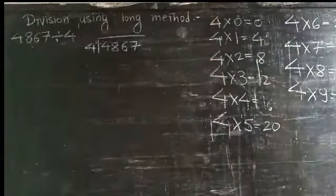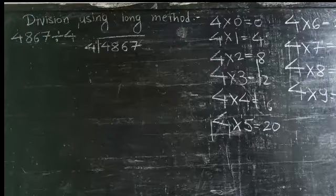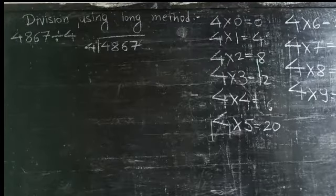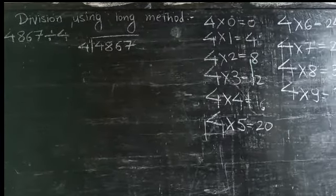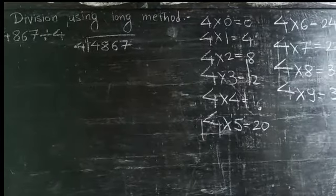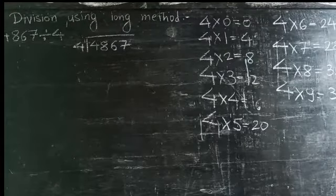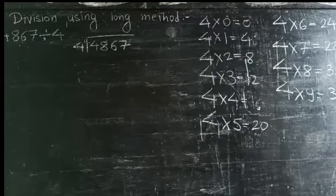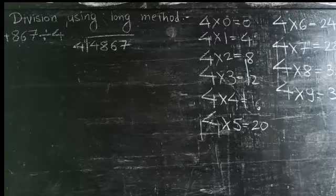First you write the tables of four so that it will be easy for you. You can see the tables of four there, so it will be easy for you to see the tables. Those who know the tables by heart, it will be easy for them.